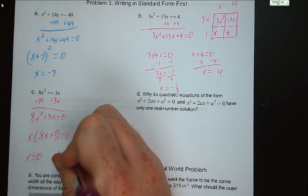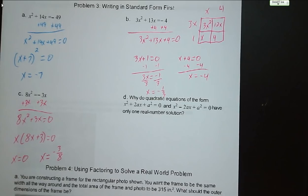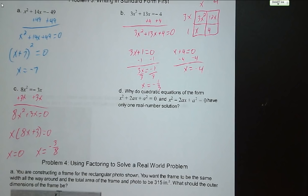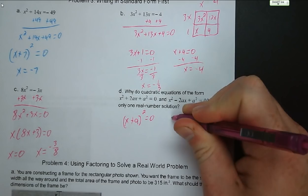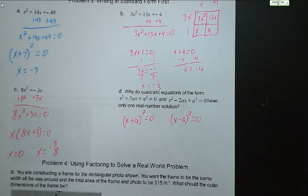Why do quadratic equations of the form x squared plus 2ax plus a squared equals 0 or x squared minus 2ax plus a squared equals 0 have only one real number solution? Because if we factor them, we get x plus a squared equals 0 or x minus a squared equals 0 — they're perfect square trinomials. You have two terms that are the same thing, so they produce the same factor. On questions like these, your vertex is actually on the x-axis, so your solution is your vertex.